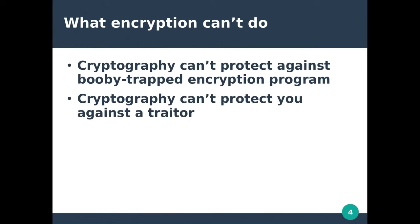Cryptography can't protect you against a traitor. Whenever you're encrypting something, especially if you're sending a message to someone else, if that person decrypts the message because you let them decrypt it and then they share the decrypted message with somebody else, there's nothing you can do about that. You've given ownership of the data to somebody who has permission to decrypt it. If somebody can access the data and they have permission to, they could do anything they want with that data.